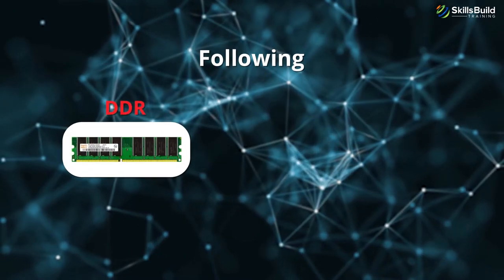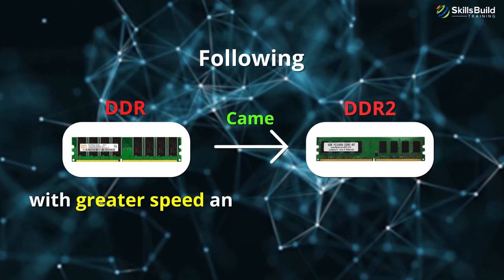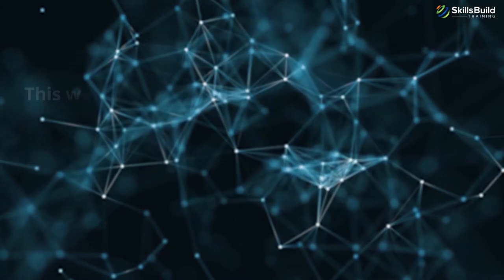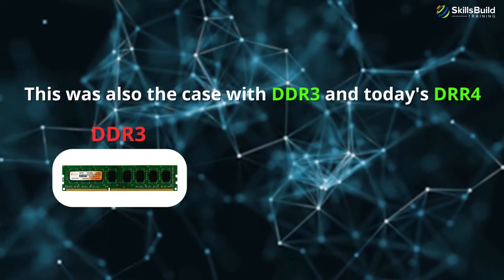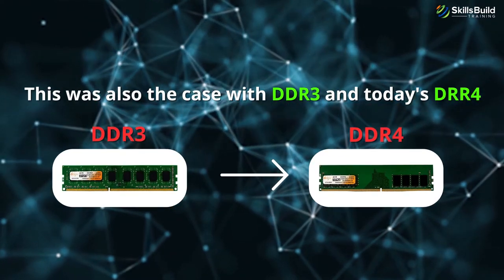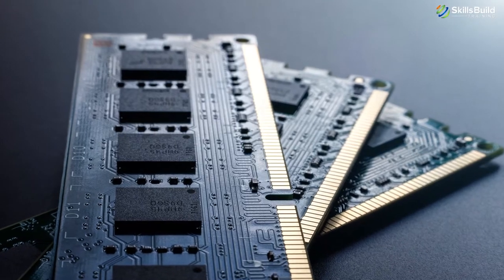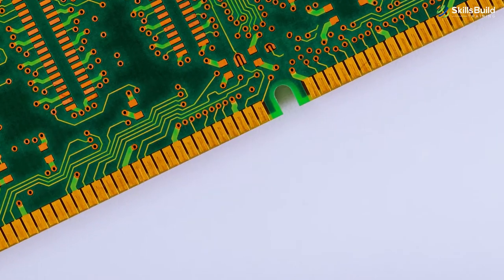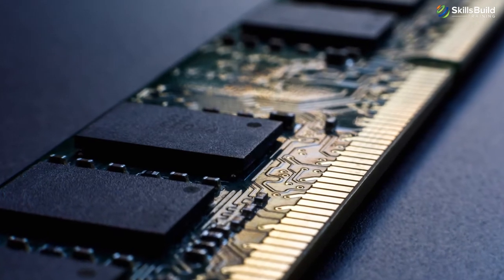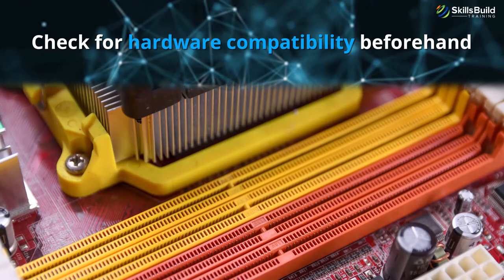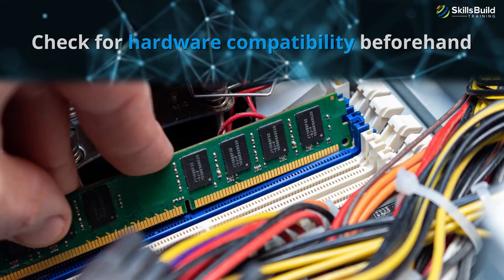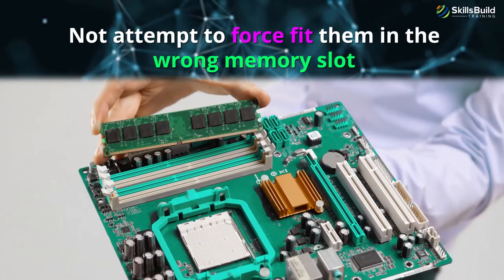Following the DDR came DDR2, with greater speed and less power consumption. This was also the case with DDR3 and today's DDR4. Despite sharing the same DIMM format, each DDR version has its own notches and pin layout, so these technologies are not compatible. The difference between notches is actually very subtle between DDR1, DDR3, and DDR4 modules, so it is important to check for hardware compatibility beforehand and not attempt to force fit them in the wrong memory slot.